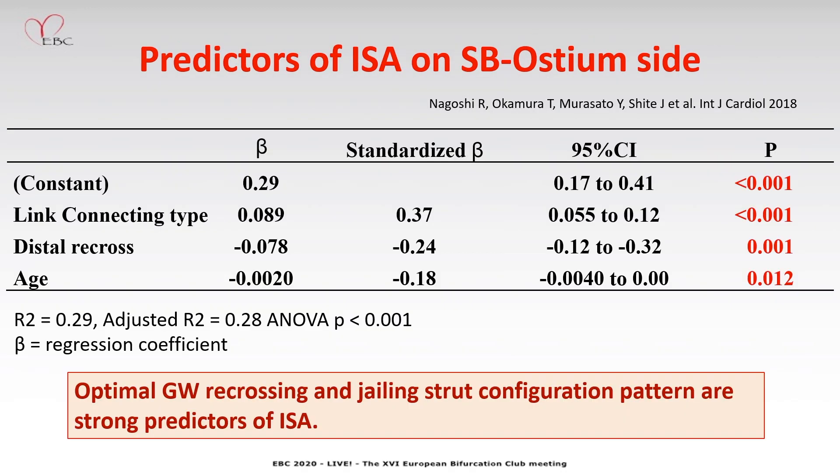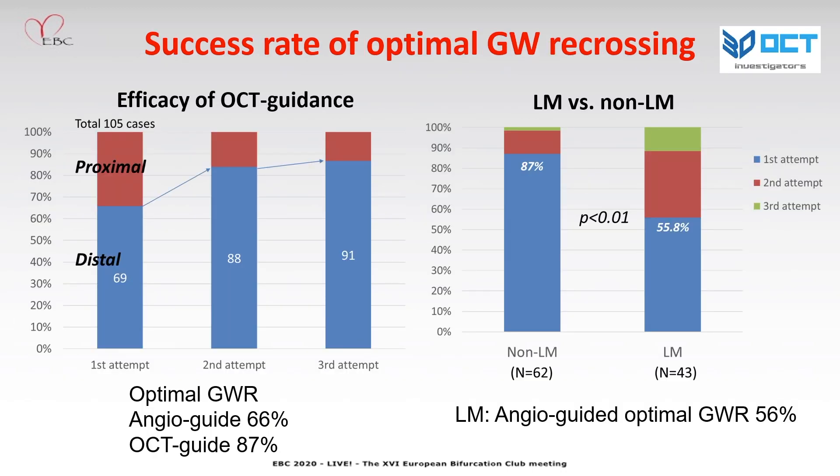We conducted multivariate analysis for detecting the predictor of incomplete stent apposition. Here you can see link-connecting type in the left panel. This slide shows the success rate of optimal guidewire recrossing. In the left panel, first attempt — that means angio-guided wiring — succeeded in optimal wiring in only 66%. Accumulating the attempts, OCT guidance elevated the success rate up to 87%. In the last panel, that is the comparison between left main versus non-left main bifurcation.